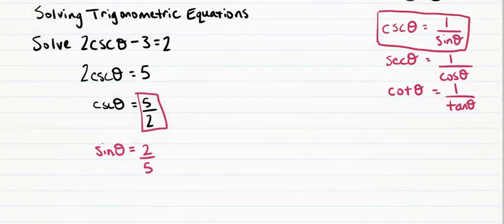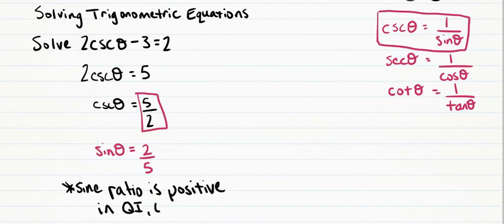Looking at the ratio of 2 over 5, we first notice that this is not a ratio that comes from our special triangles, so in order to solve for our values of theta we're going to be using the sine inverse on our calculators. We notice that this is a positive ratio, and the sine ratio is positive in quadrants 1 and 2.